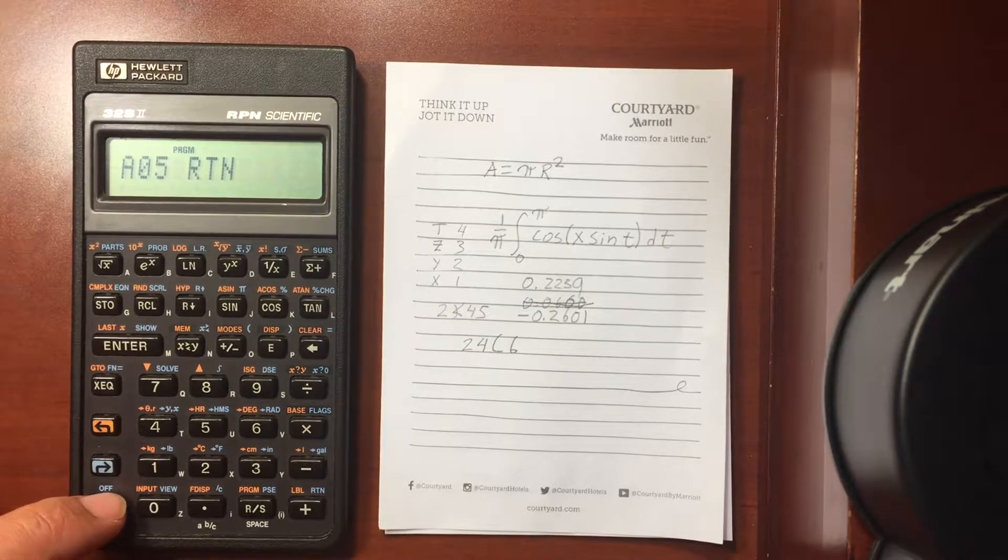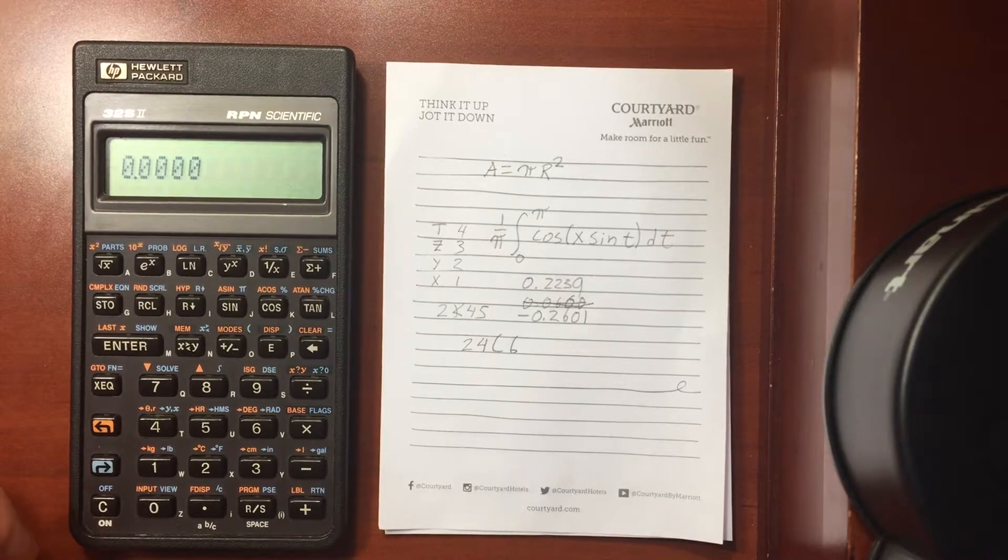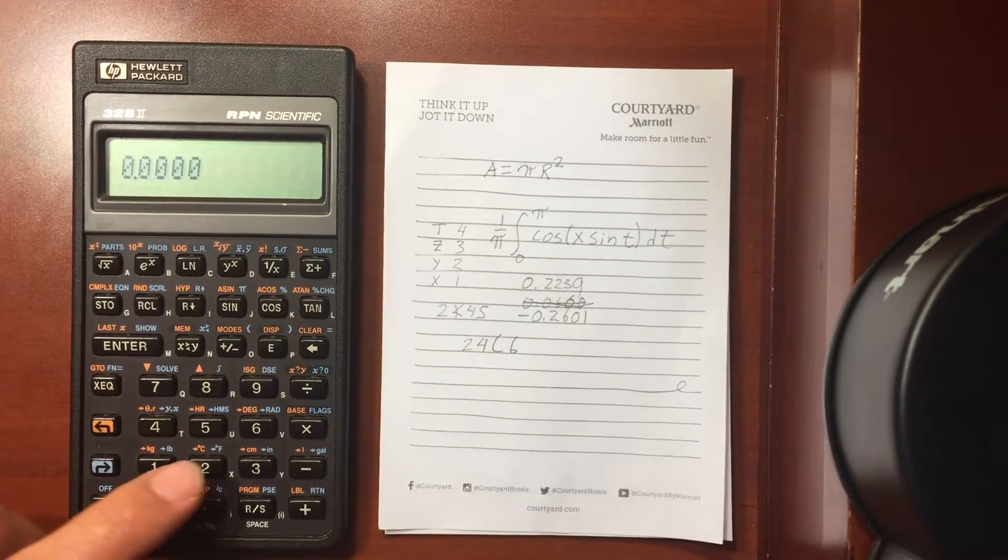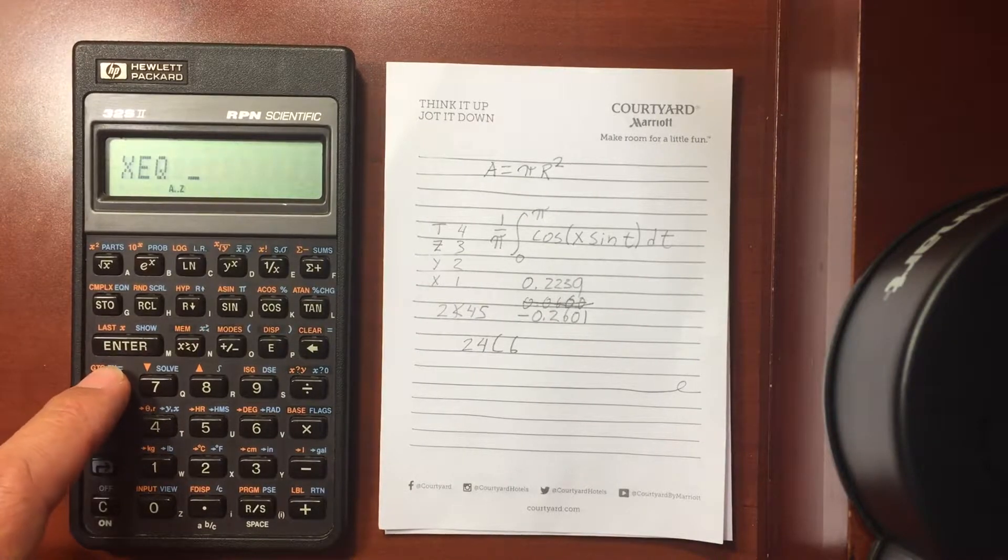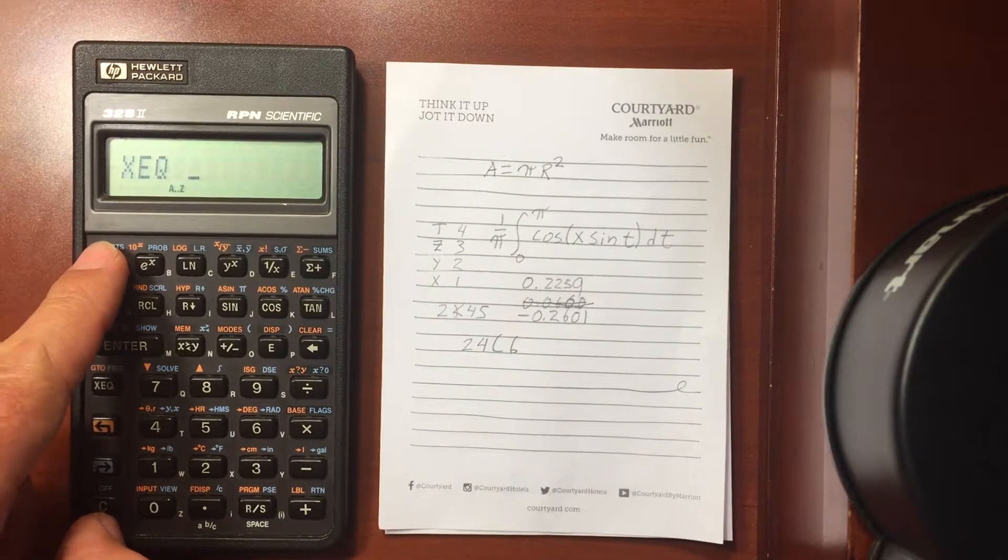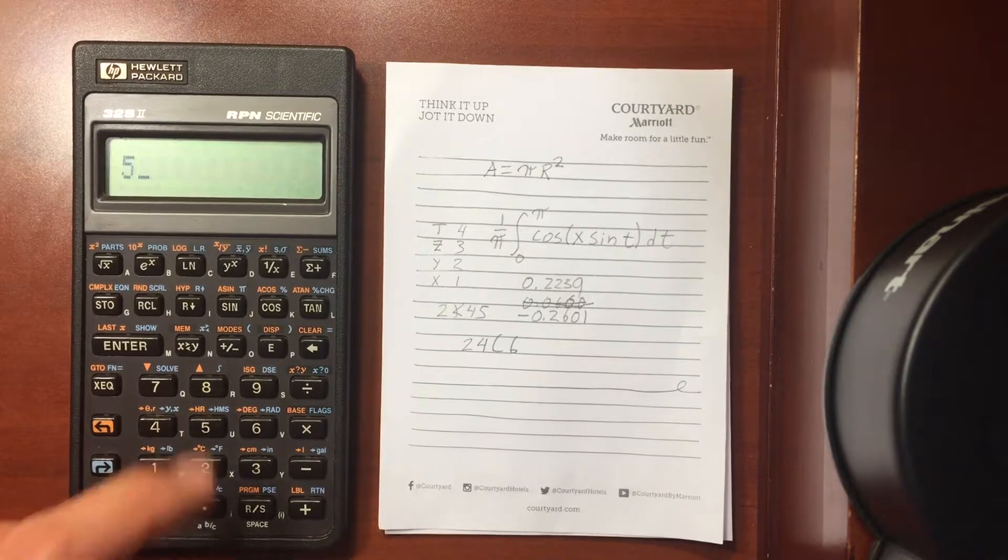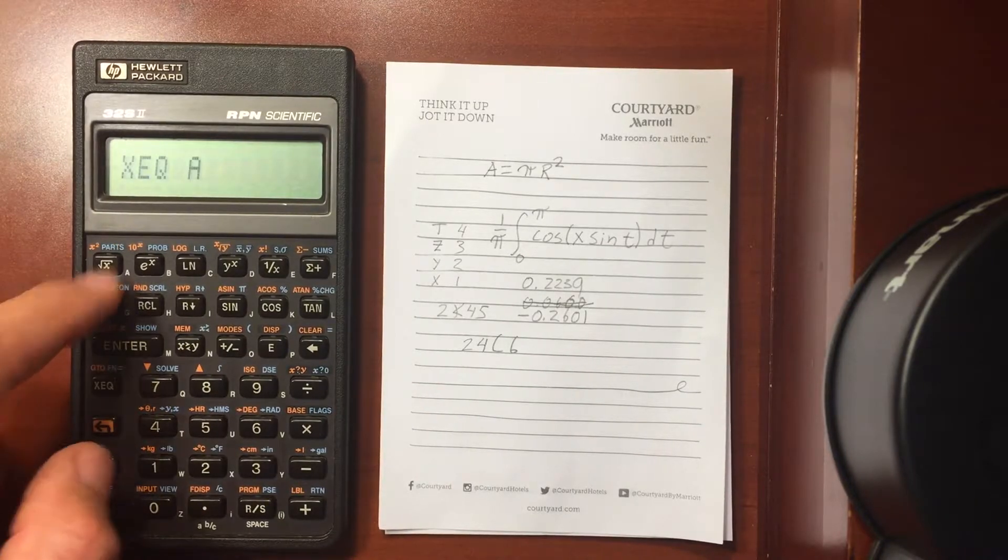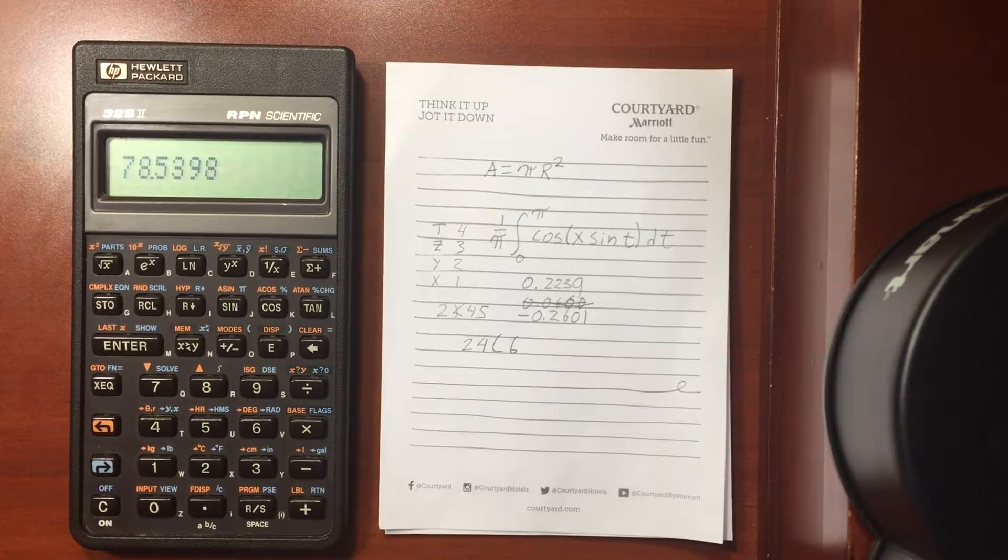All right, so now let's test it out. For a radius of 2, I'm going to execute, which program do I want to execute? I want to execute the A program. It runs and it gives me an answer of 12.56. I execute 5, that gives me an answer of 78.54, which is my area for a circle of radius 5.